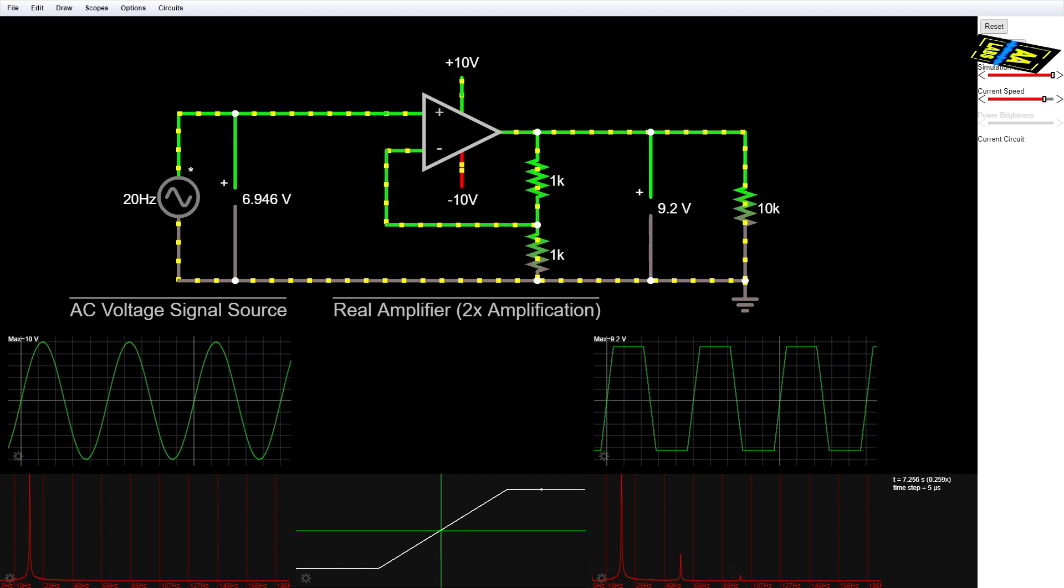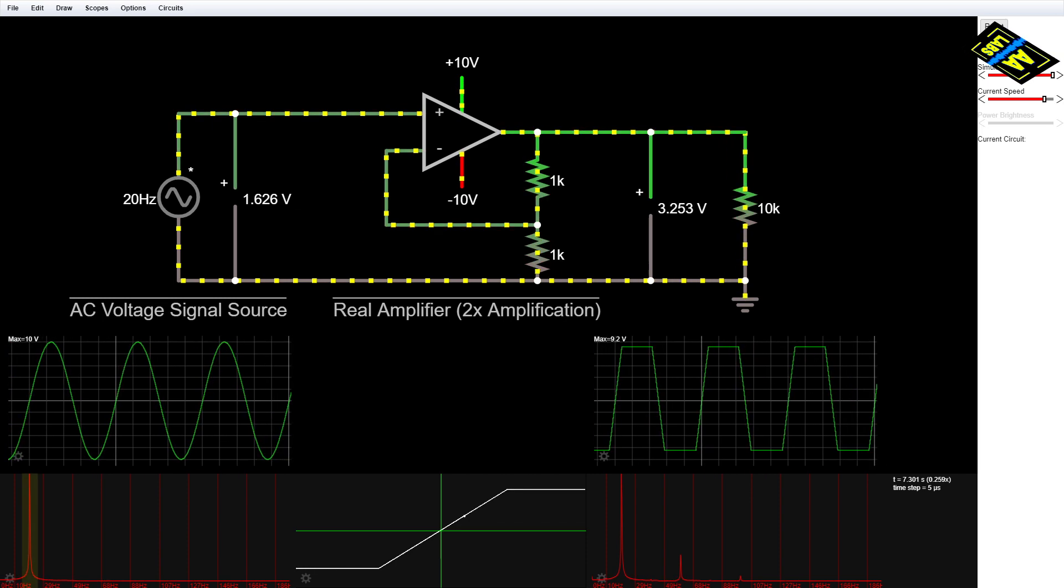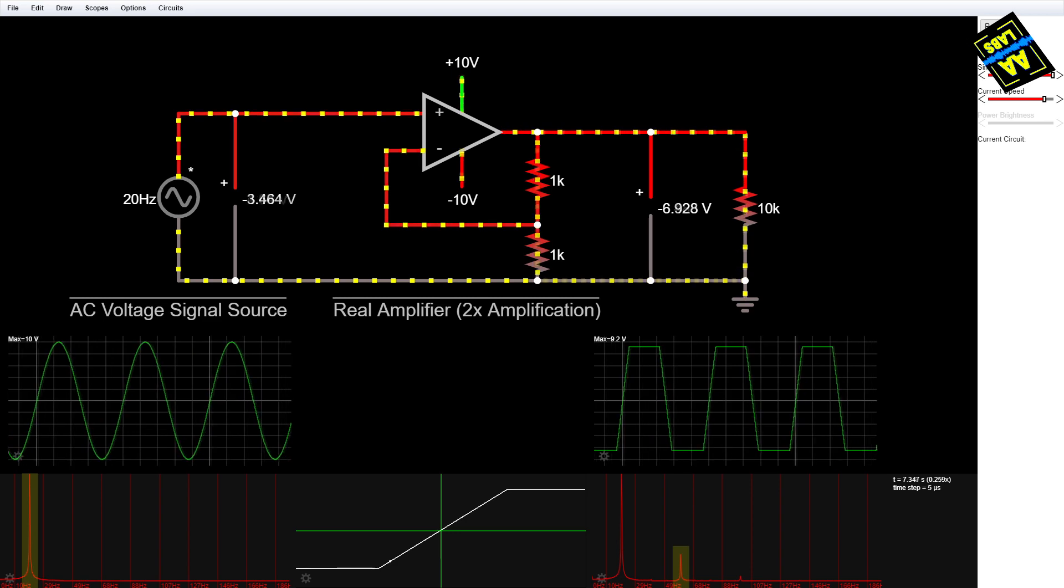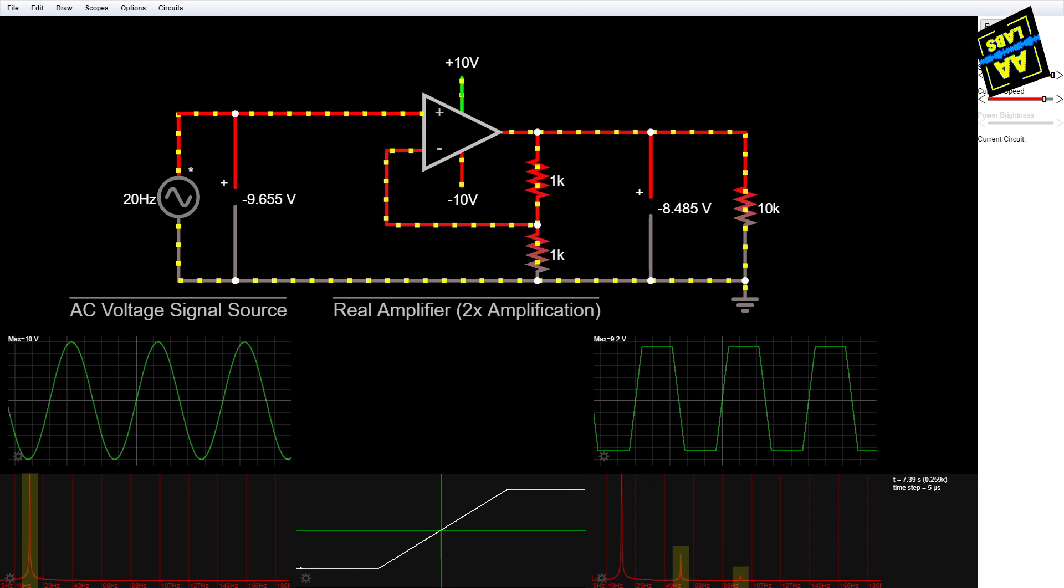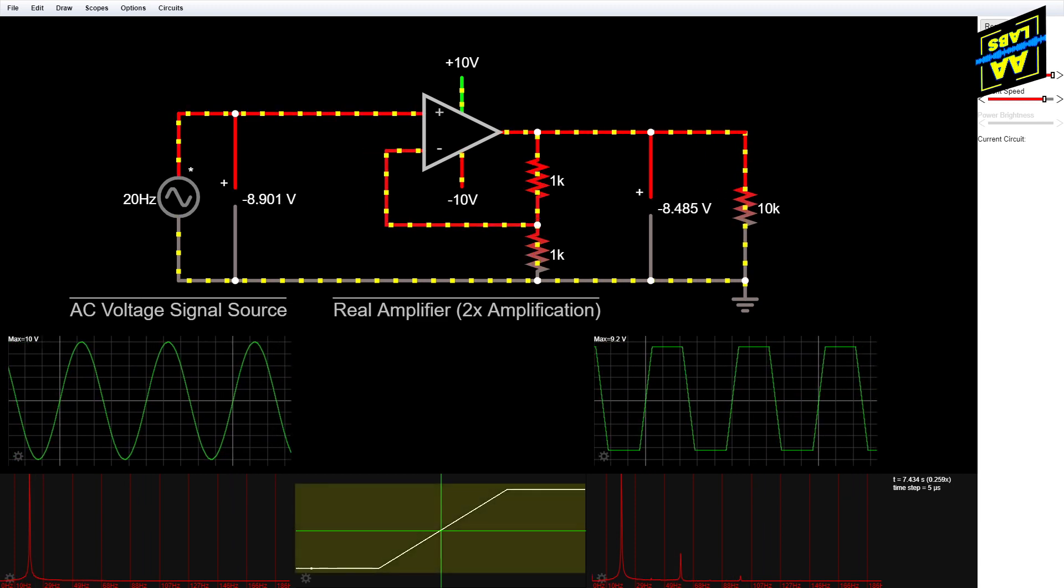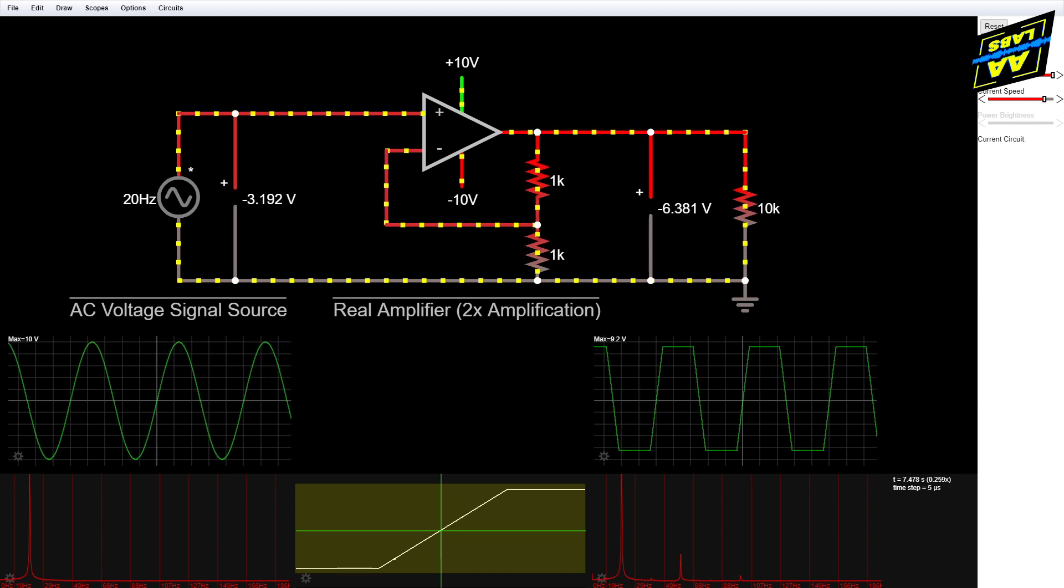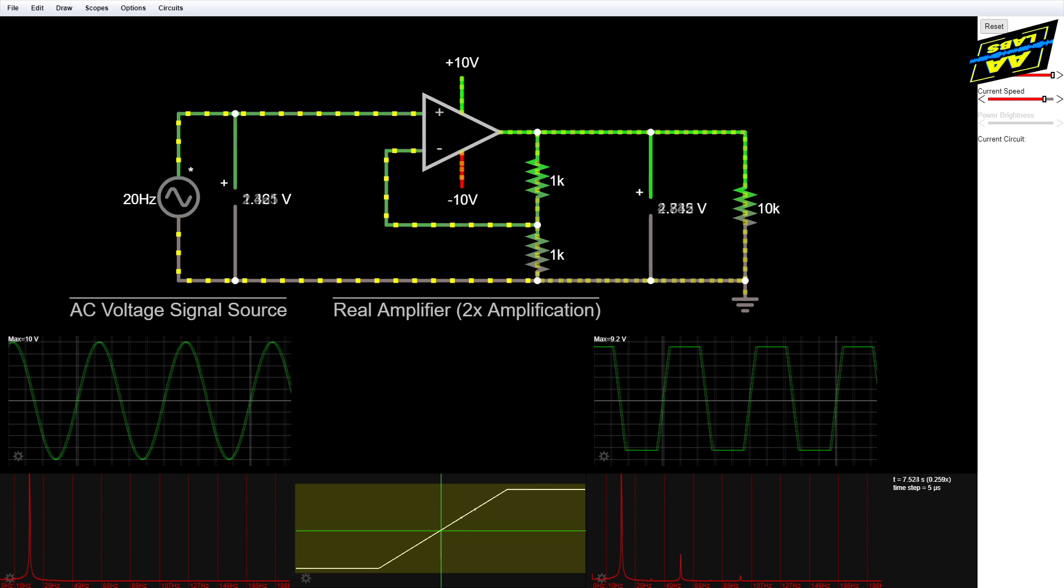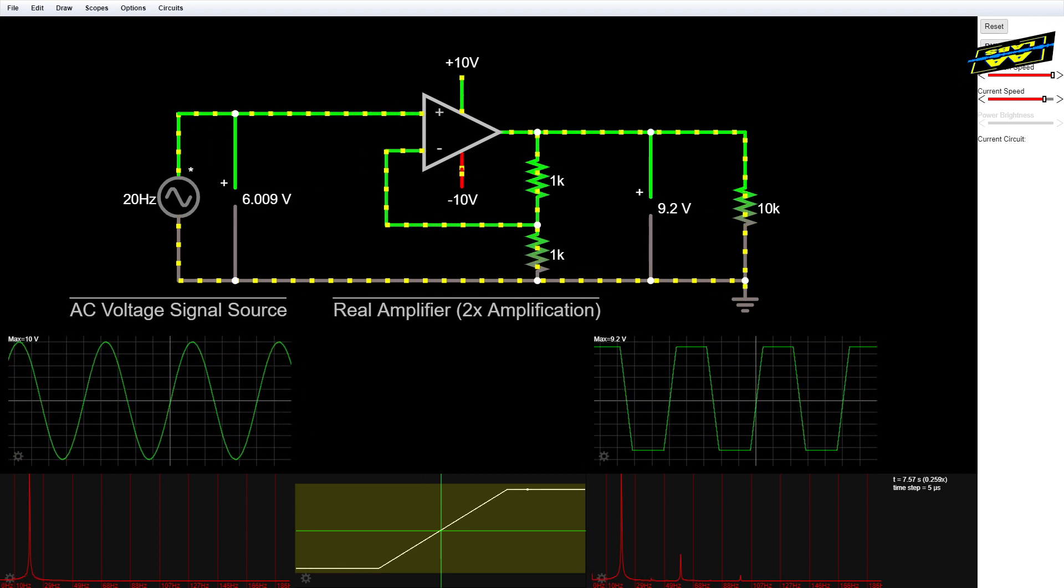Now you may have noticed that only odd integer multiples of the input frequency are present. We put in 20 hertz and we're getting out 20 times 3 equals 60 hertz, and 20 times 5 equals 100 hertz. Why is this? Well, because our amplifier's input-output relationship has 180-degree rotational symmetry about the origin, or in mathematical terms, is an odd function, this amplifier only produces odd harmonics.